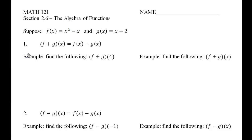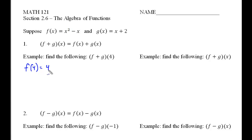We are not going to do composites of functions yet, where the function is inside the other function in this chapter. We're going to start off by taking f and g and adding them together with the value of 4 for the x value. As we learned in a previous section, f is taking that number and plugging it in for the variable x. 4 squared is 16, and 16 minus 4 is 12. So f of 4 is 12.